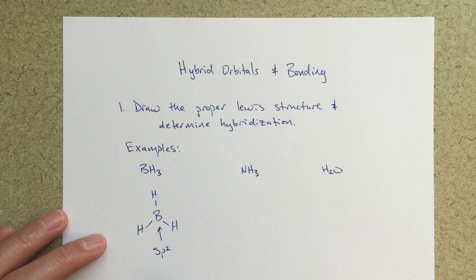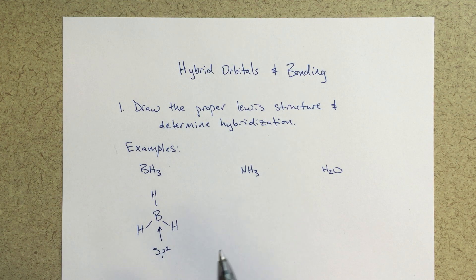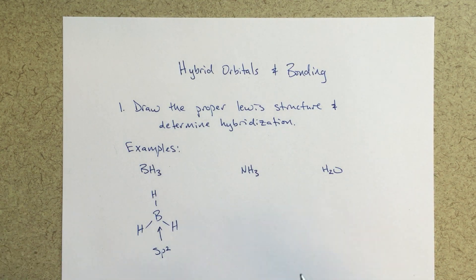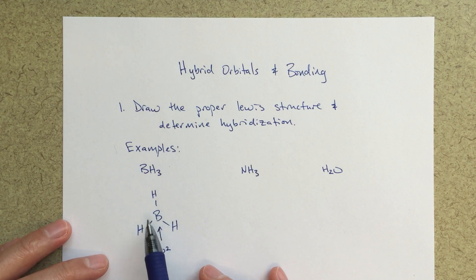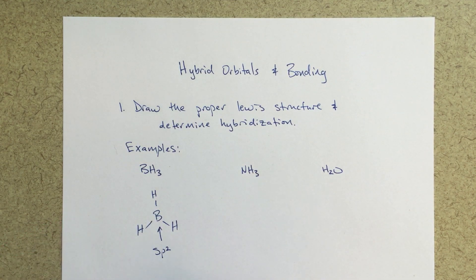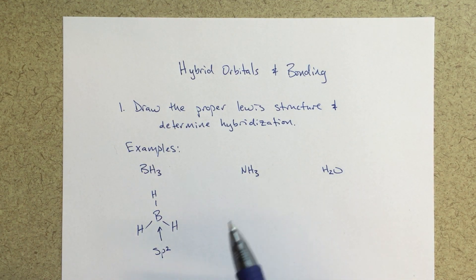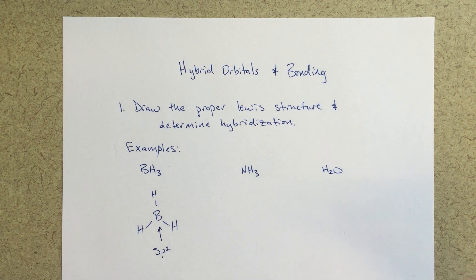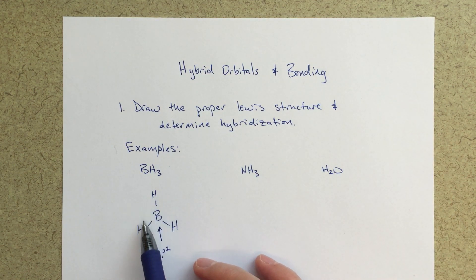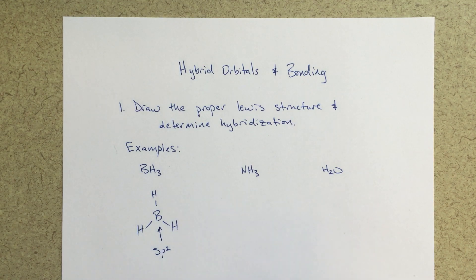The molecular geometry, hybridization, and bond angles are all related. If this is 120 degrees and trigonal planar, it's sp2 — that's all really saying the same thing. Trigonal planar molecules will always have sp2 hybridization. If you've got 120 degree bond angles, that will always indicate sp2 hybridization. Those things all go hand in hand.